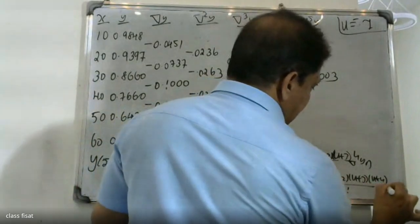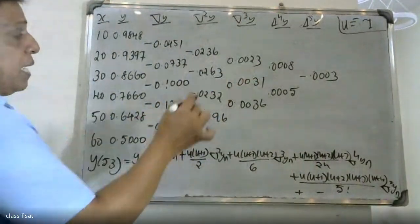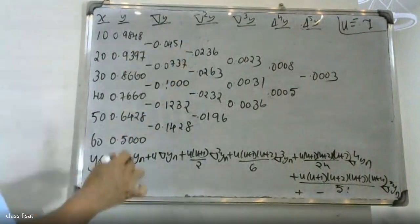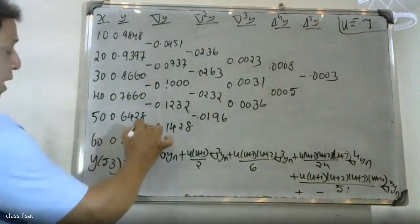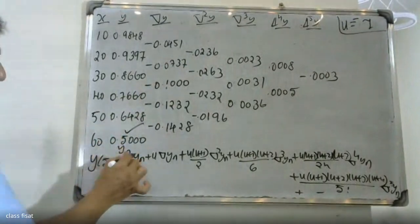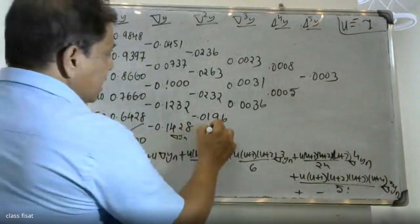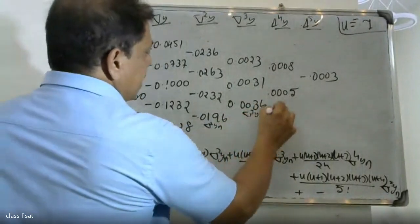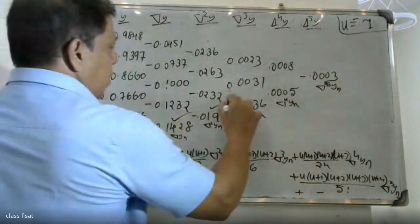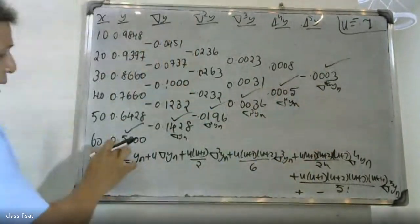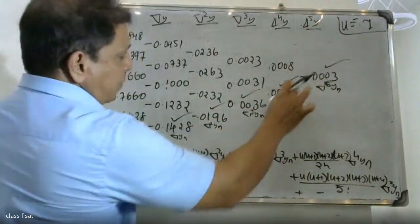Using the formula with u = -0.7, we now identify all required difference values: yn, Δyn, Δ²yn, Δ³yn, Δ⁴yn, and Δ⁵yn from the last row of the difference table to substitute into Newton's Backward Interpolation formula.